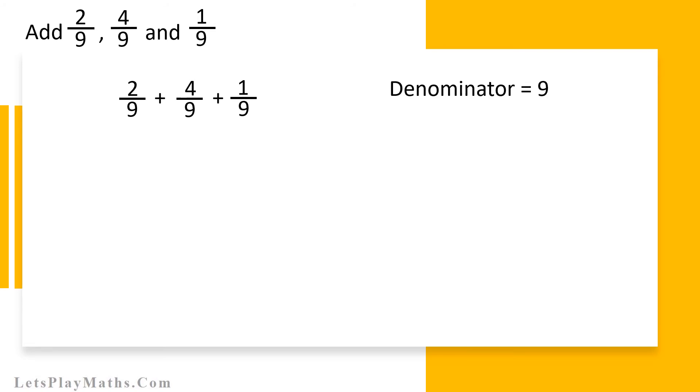All the fractions numerators are number 2, number 4, and number 1 as shown here. If we add 2 by 9, 4 by 9, and 1 by 9, then the result's denominator will be number 9 as shown here.